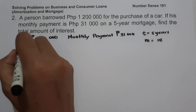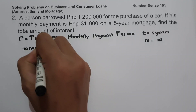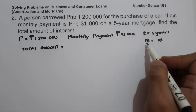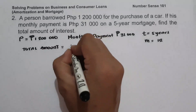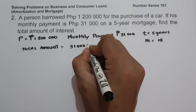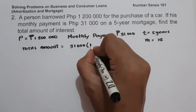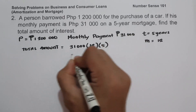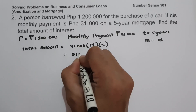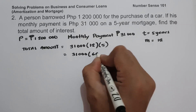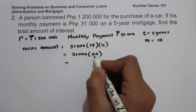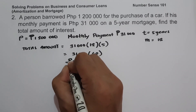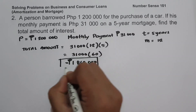To find the total amount paid, we multiply the monthly payment by the number of conversion periods and by time: total amount paid = 31,000 × 12 × 5 = 31,000 × 60 = 1,860,000 pesos.